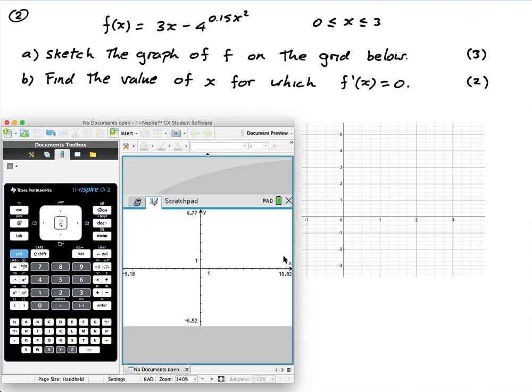So get out my calculator. This is a paper two, by the way, guys. I genuinely have no idea what this looks like. I can have a bit of a guess, but not really. So go into your graph and type this in: three x minus four to the power of zero point one five x squared like this.